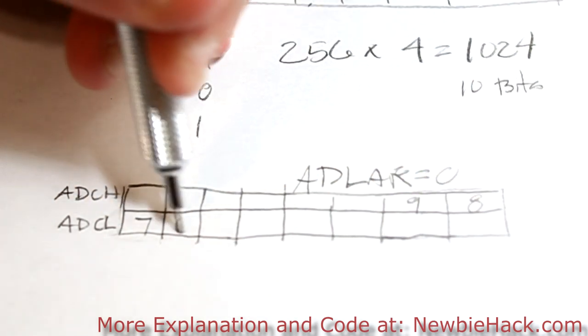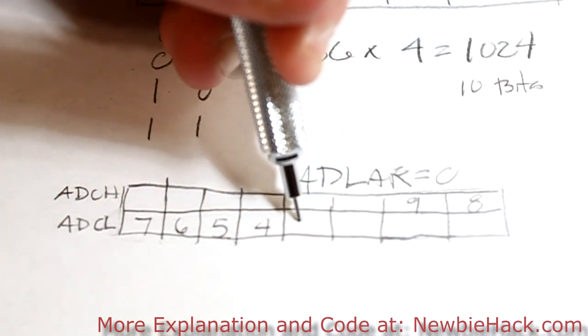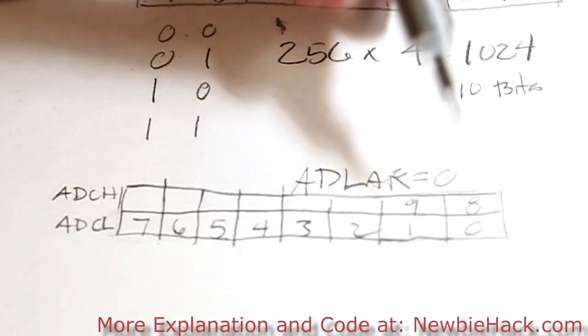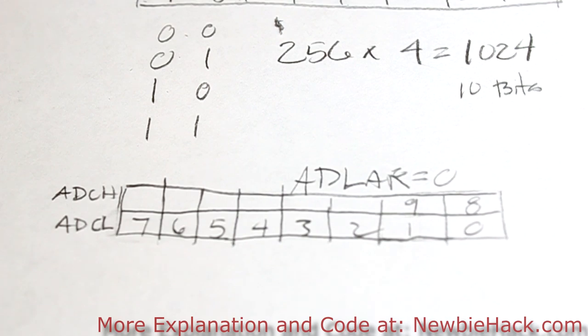And then 7 starts here, 6, 5, 4, 3, 2, 1, and 0. Now what we're going to have to do is create a 16-bit number so we can put this 10-bit number into that 16-bit number.